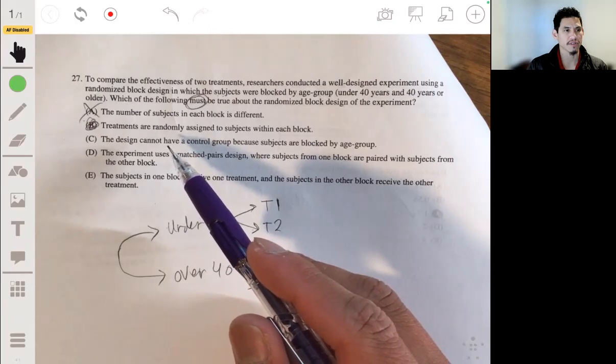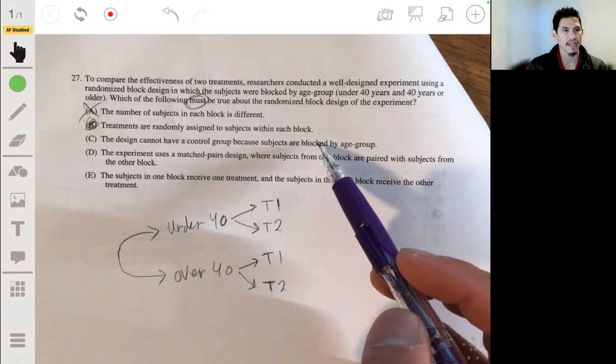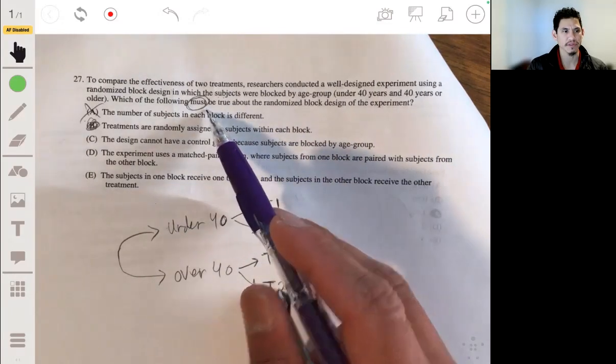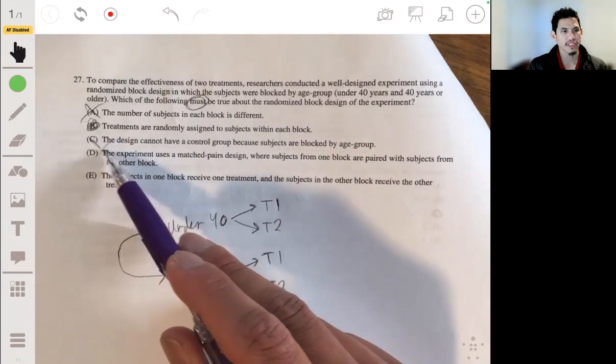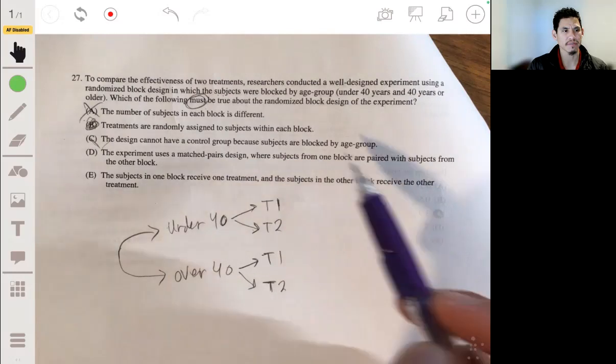Let me just briefly talk about the other ones. The design cannot have a control group because subjects are blocked by age group. That's not necessarily true. They could still have a control group. Remember, it's saying must be true.